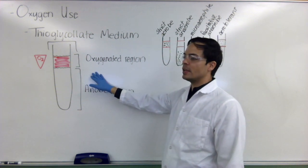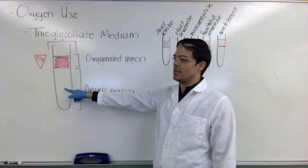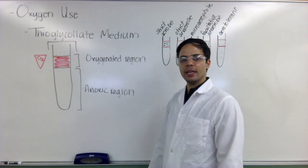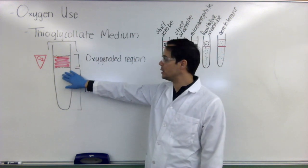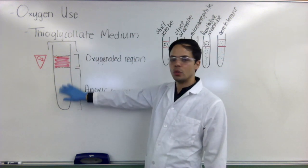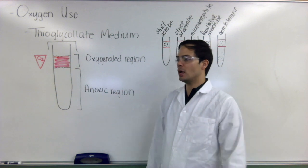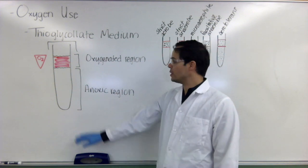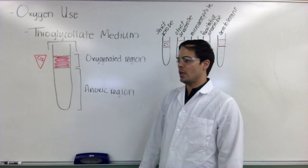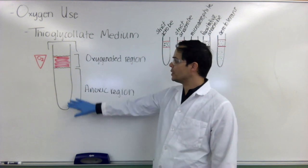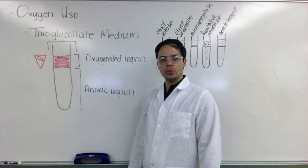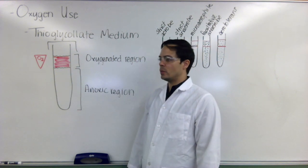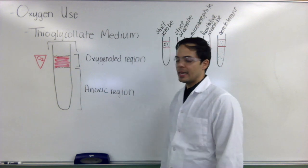So the thioglycolate medium has yeast extract in it as well as pancreatic digestive casein and these are nutrients that the bacteria will be using to grow in the medium. Also in the medium is glucose, a source of sugar, and reducing agents that are going to reduce oxygen, and those include sodium thioglycolate and cysteine.